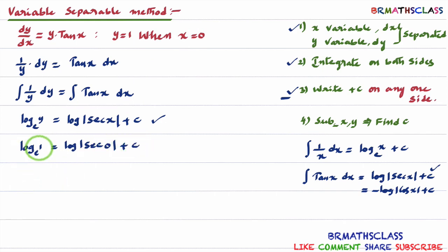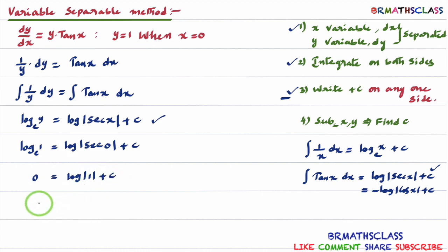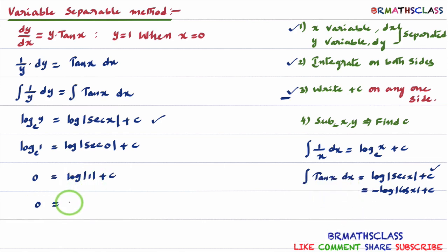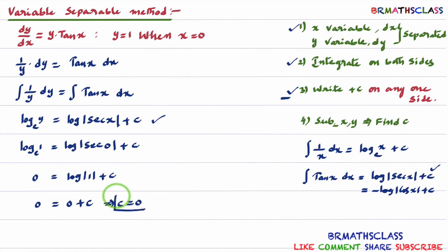In the logarithm chapter, we know that log 1 base e is 0. We also know that sec 0 value is 1. So modulus of 1 is 1, and log 1 is 0. Therefore, 0 equal to 0 plus c, which gives the value of c as 0. Don't think that for every problem we will get c equal to 0 — luckily, we got c value 0 here. So for this particular x value and y value, c is 0.